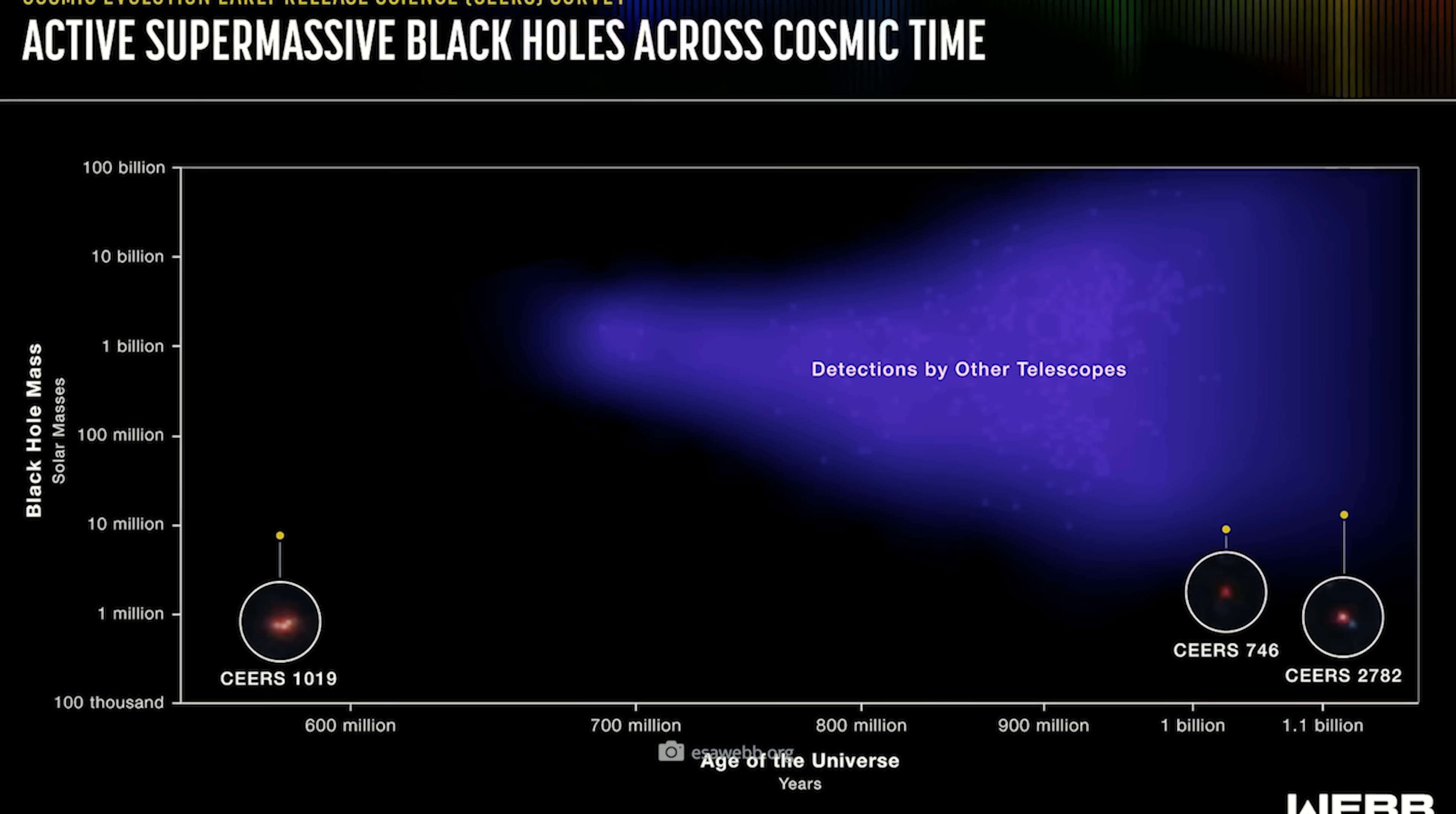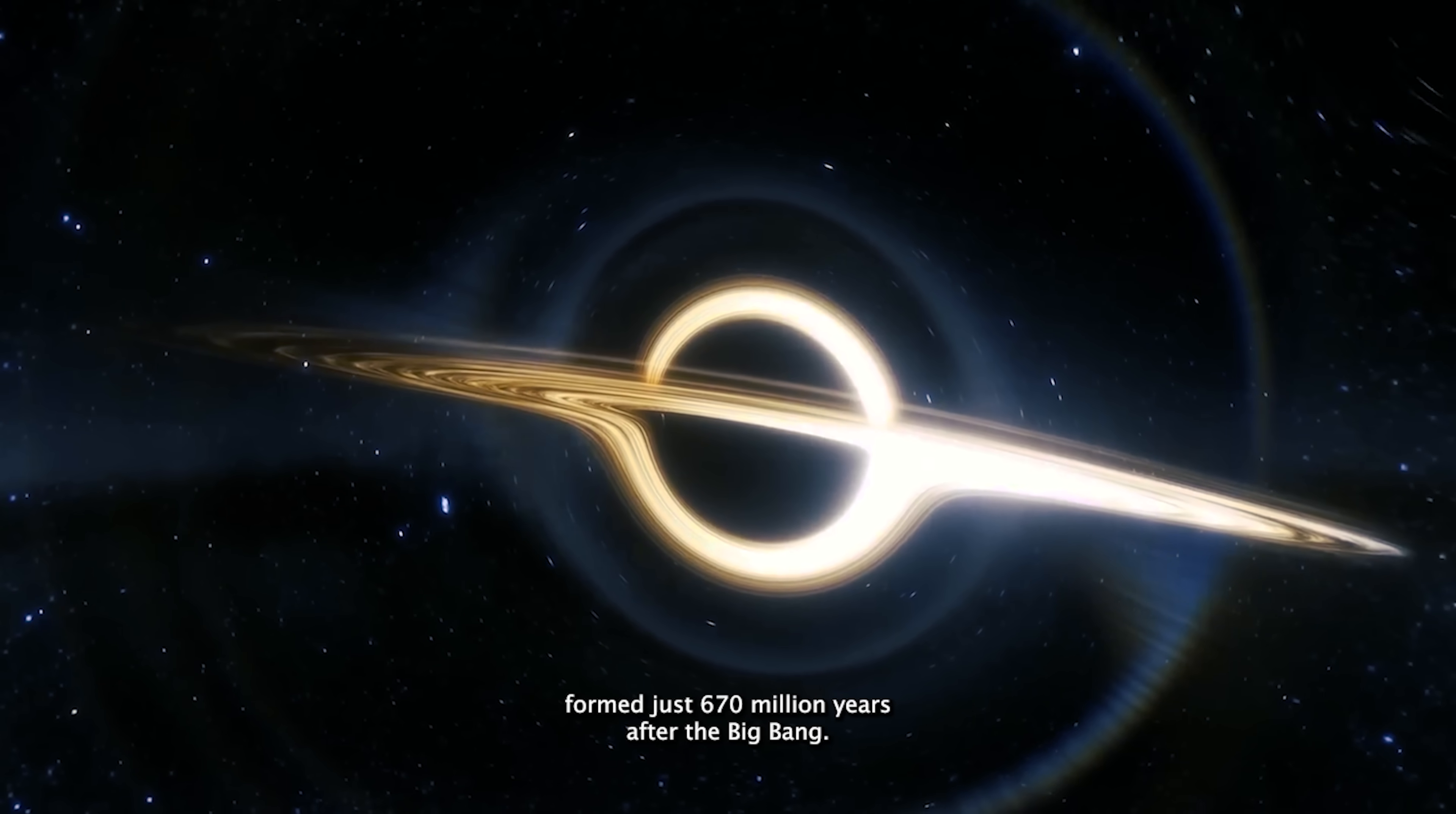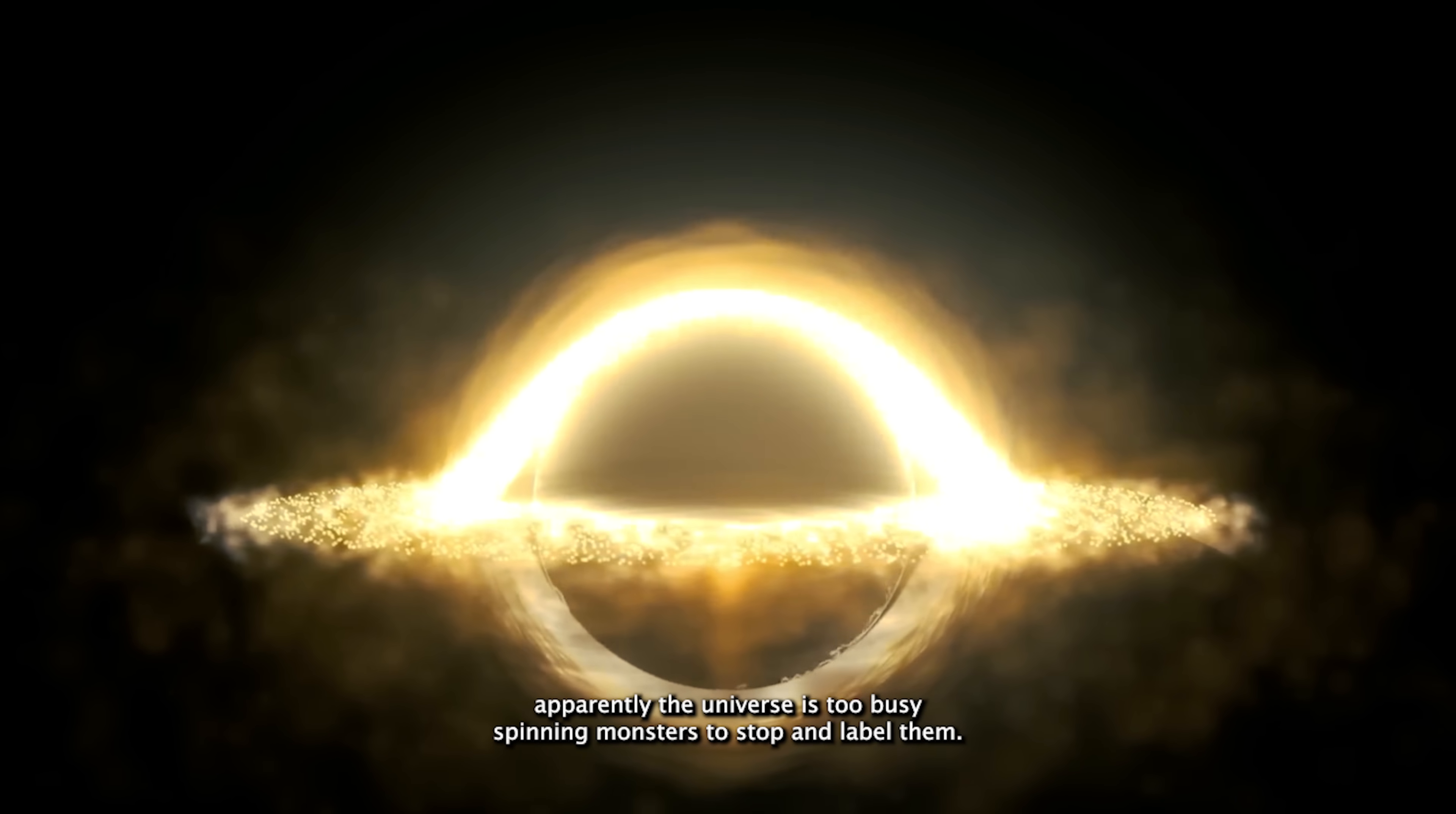Just when we thought Sears 1019 was the biggest cosmic curveball, the universe said, hold my stardust. Another cosmic beast has roared out of the Webb Telescope's deep space vault. A black hole weighing in at a jaw-dropping 800 million solar masses formed just 670 million years after the Big Bang. That's even bigger than our last record-shattering heavyweight, and this one doesn't even have a proper name yet, because apparently the universe is too busy spawning monsters to stop and label them.